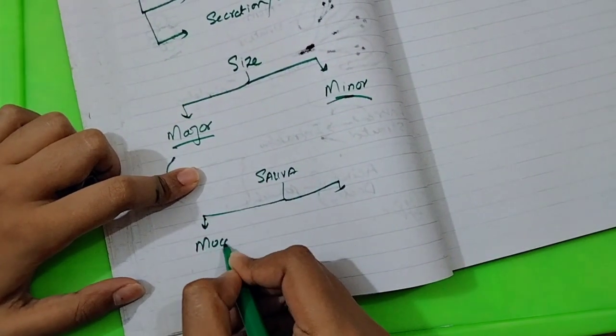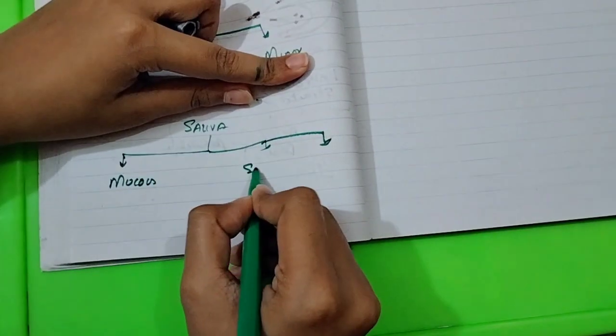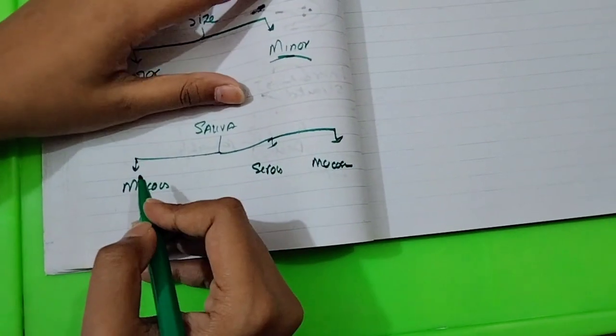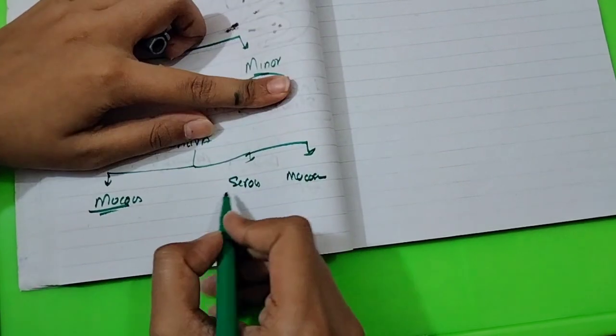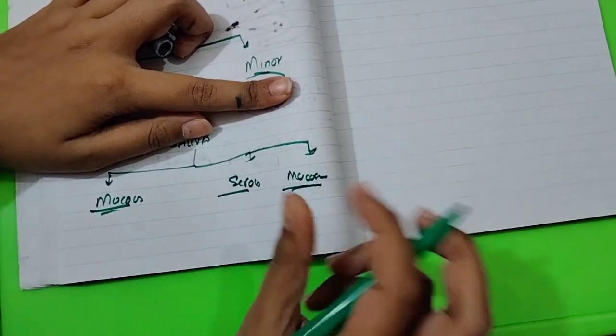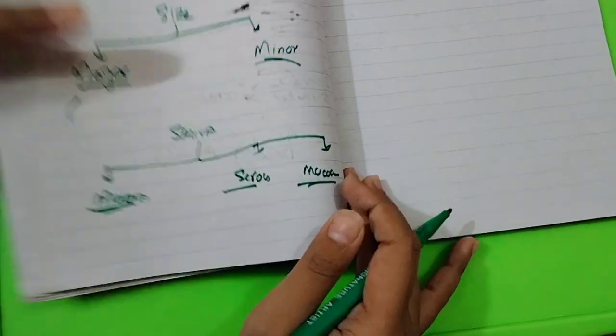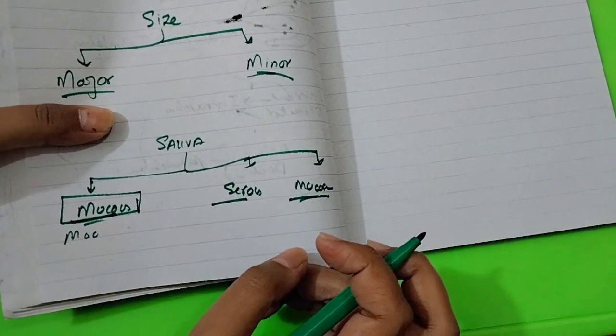If we divide the salivary gland by secretion, we have three types: mucus gland, serous gland, and mucoserous gland. One produces mucus secretions, one produces serous secretions, and the mucoserous produces both types of secretions. We have mucus asinai, serous asinai, and glands with both types of asinai.